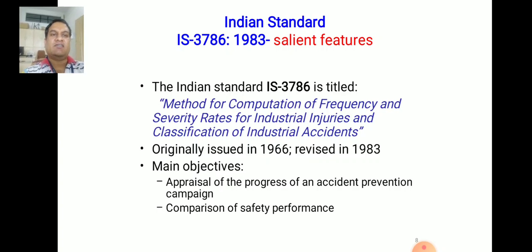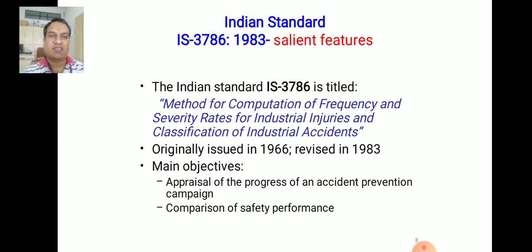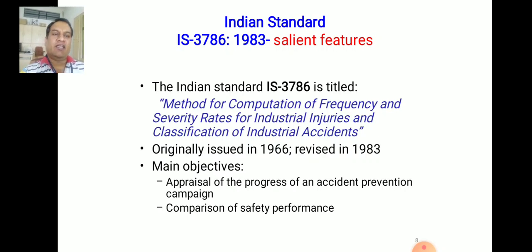As far as IS 3786 is concerned, it mainly focuses on incidents, accidents, different terminologies involved, accident classifications, and calculation methods. IS 3786 is titled: 'Method for Computations of Frequency and Severity Rates for Industrial Injuries and Classification of Industrial Accidents.' Its contents cover computations, methods, frequencies, severity rates, industrial injuries, and their classifications.